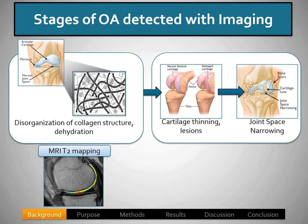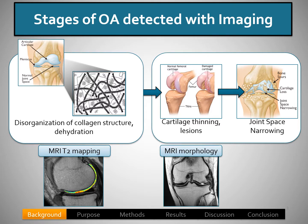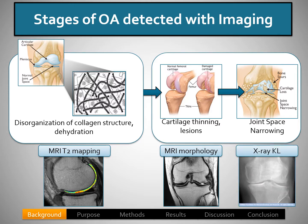The stages of osteoarthritis can be detected using various imaging techniques. For example, MRI T2 mapping is sensitive to the disorganization of the collagen structure and dehydration. MRI morphologic sequences can detect cartilage thinning and lesions. An X-ray-based KL grading can detect joint space narrowing.